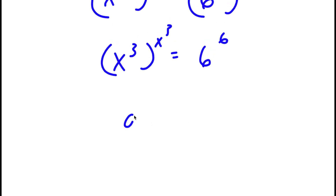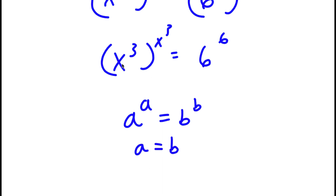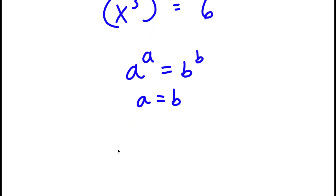Now, if I have something in the form a to the power of a is equal to b to the power of b, this means that a is equal to b. So in this case, x to the power of 3 is equal to 6.